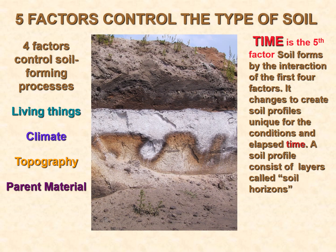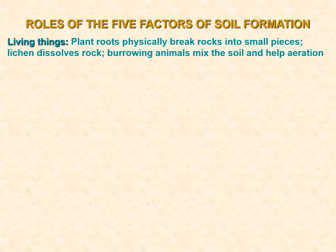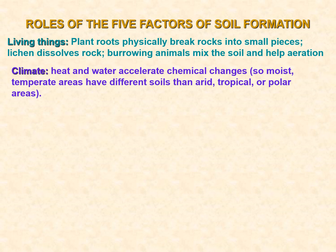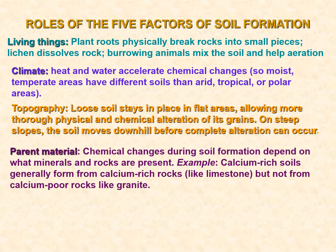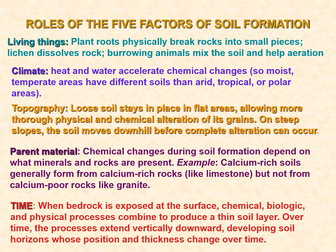These four factors — living things, climate, topography, and parent material — may be the same or different, but time will always vary. Living things such as plant roots physically break rock into small pieces, lichens dissolve rock, and burrowing animals mix the soil. Climate includes heat and water. Topography determines where plants grow and stay. Parent rock material is of three types: metamorphic, igneous, and sedimentary. Time in soil formation is a very long process.